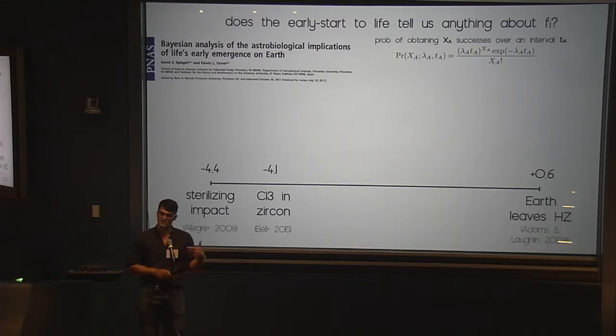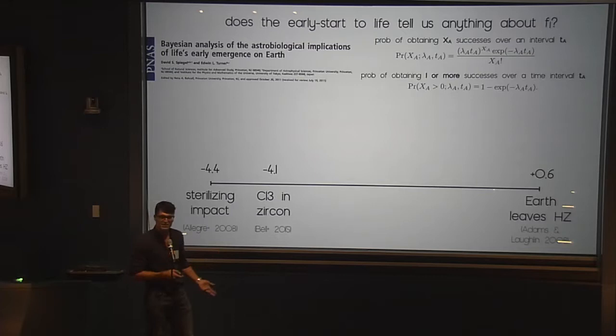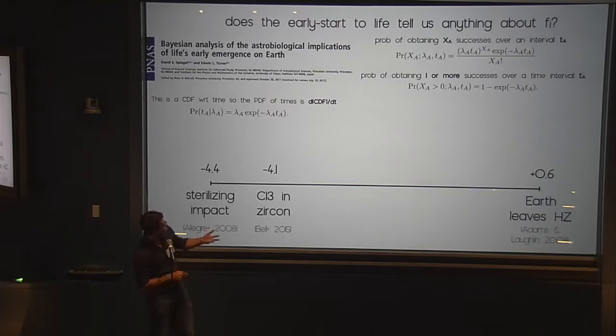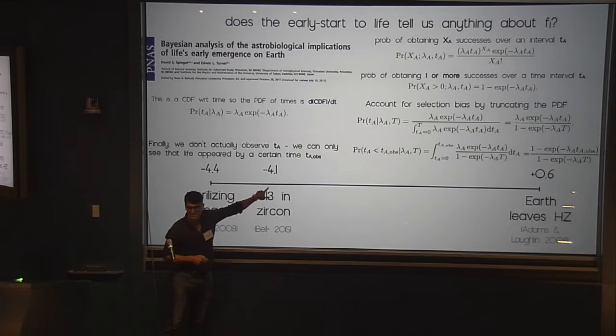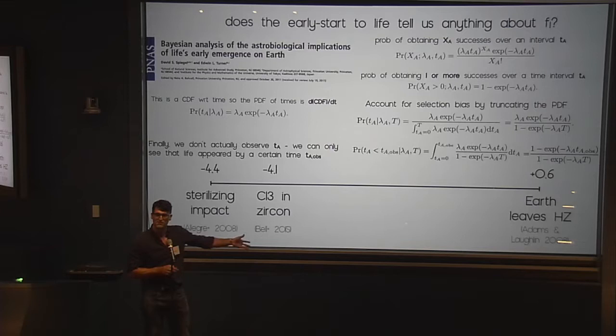Remarkably, this seems like a problem where you shouldn't be able to say anything because you have one example, one data point. There was a great paper done by Dave Spiegel and Ed Turner in PNAS in 2011. They showed that in the timeline of Earth, we have this 5 billion year window for life to get going, and life seemed to have happened fairly quickly. They presented a Bayesian formalism for challenging that naive assumption. They treat it as a Poisson process, and the number of successes is xA. You only care about having one or more success. You have to account for the very severe selection effect by truncating your distribution.